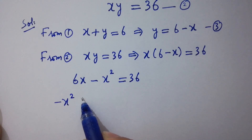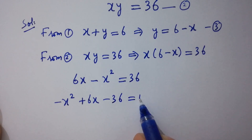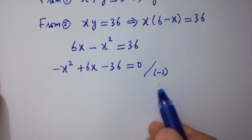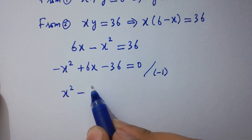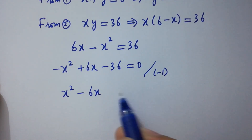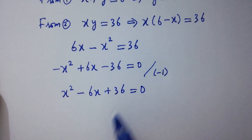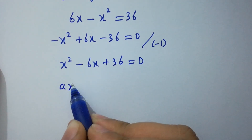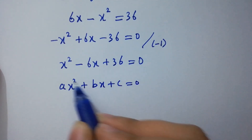Rearranging: negative x squared plus 6x minus 36 equals 0. Divide both sides by minus 1. We get x squared minus 6x plus 36 equals 0, which is a quadratic equation of the form ax squared plus bx plus c equals 0.